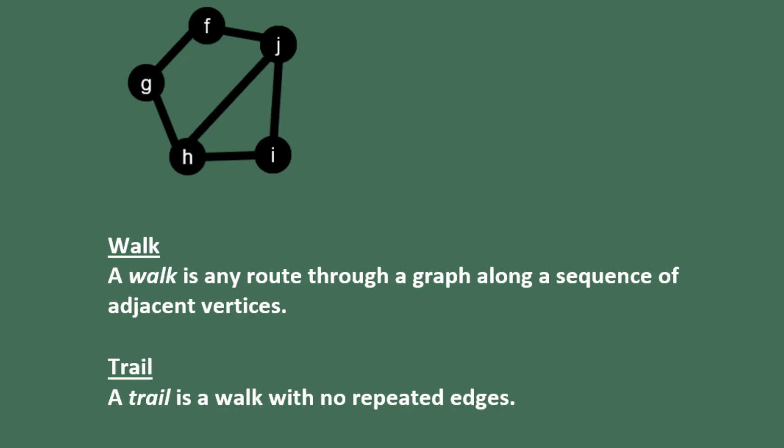A trail is a walk with no repeated edges. I to J, J to H, H to G, then G to F. That would be an example of a trail. What I could not do is turn back around and go from F to G, and G back to H, and repeat a couple of the edges. That would be a walk, but it would not be a trail.